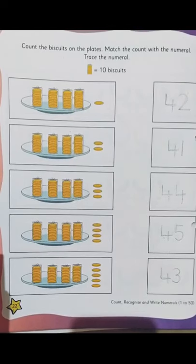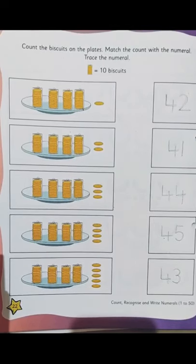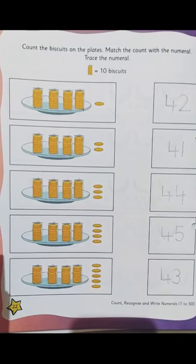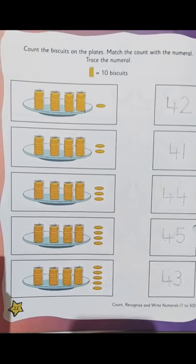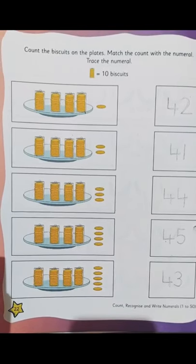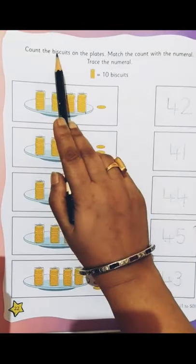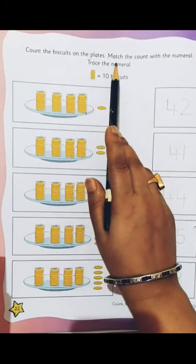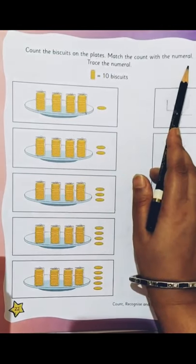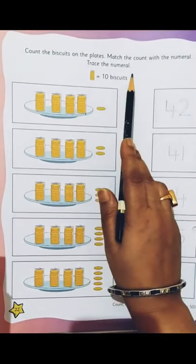So now children we open up our Little Think of Mathematics and open to page 22 and 23. So what do we have to do? Count the biscuits on the plates. Match the count with the numeral. Trace the numeral.